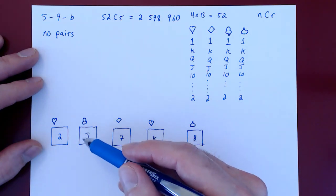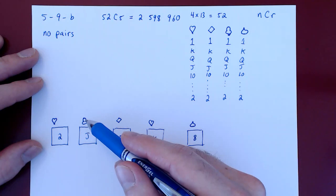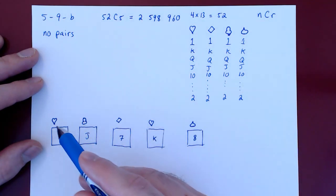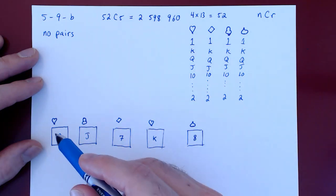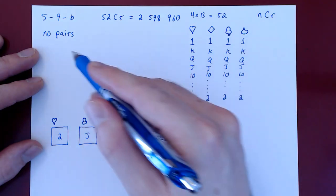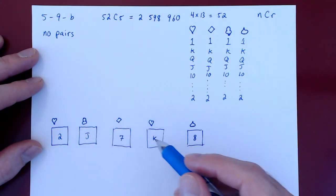Notice that the suit here was irrelevant. If the jack was a jack of either hearts, diamonds, or spades, this would still be a valid hand with no pairs. So clearly here what really matters are the kinds that we are dealt. To have no pairs means that we have to have five cards of a different kind.